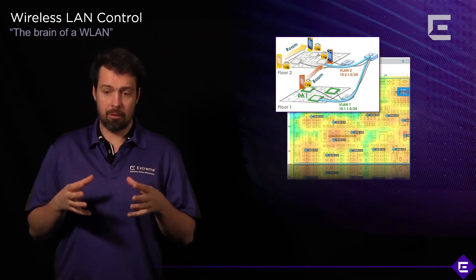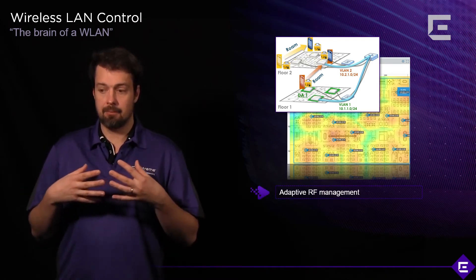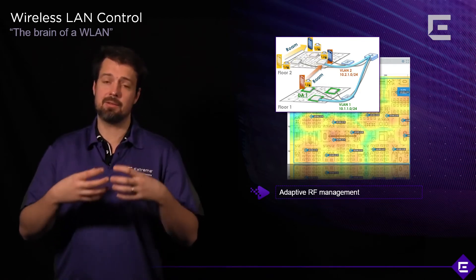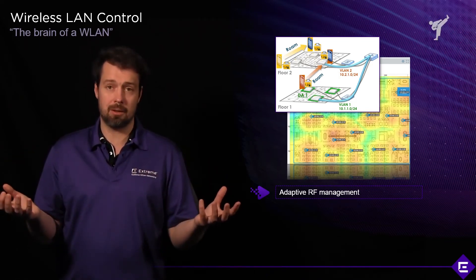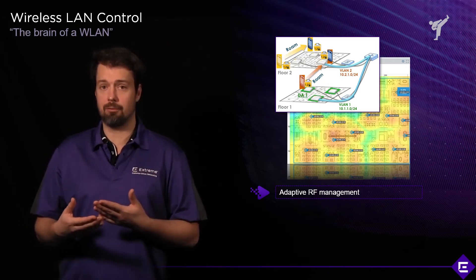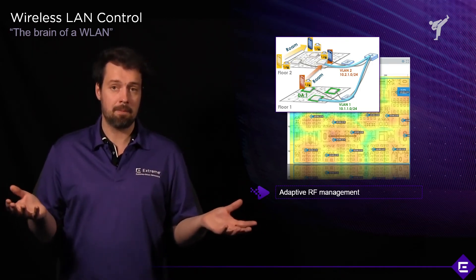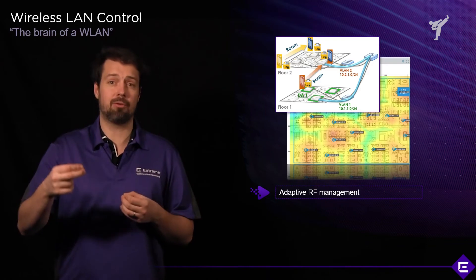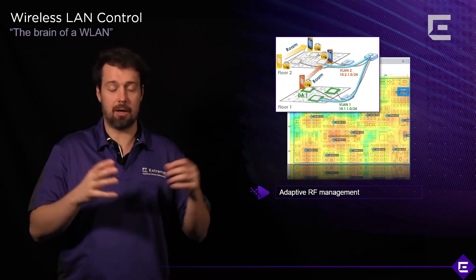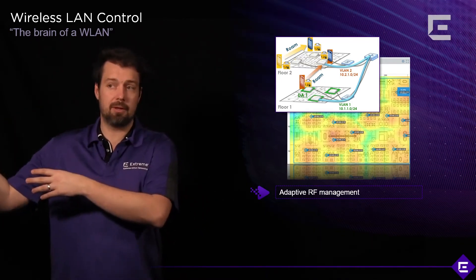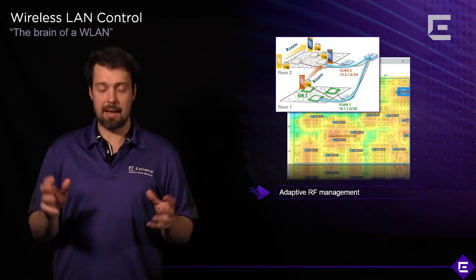One of the things we talked about was adaptive RF management, or radio resource management. A well-performing Wi-Fi network will continuously adapt to the RF environment, and the RF environment is always changing. For example, if you do measurements using a spectrum analyzer and a Wi-Fi survey today, tomorrow it's going to be different — maybe even an hour from now. It will be different between 8 AM and 4 PM when people are working, and different in the evening when people leave the office. A well-performing Wi-Fi deployment will adapt to those changes.